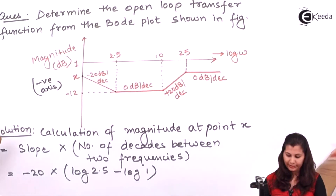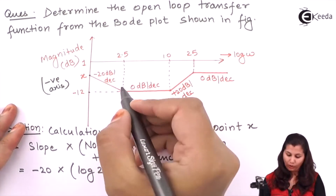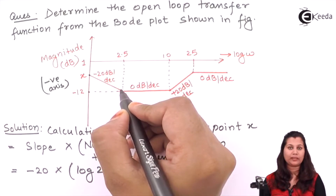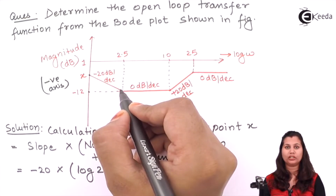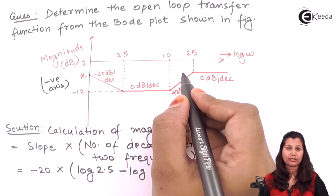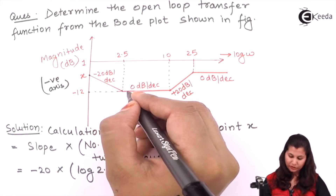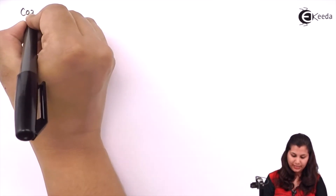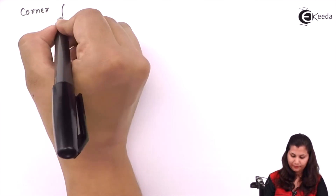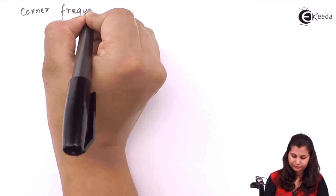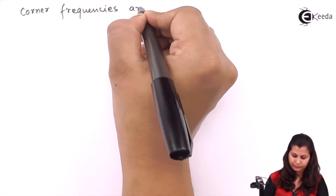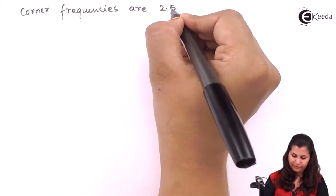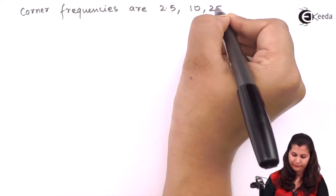The corner frequencies — the frequencies at which the slope of the Bode plot changes — are 2.5, 10, and 25. So we have three corner frequencies: 2.5, 10, and 25.